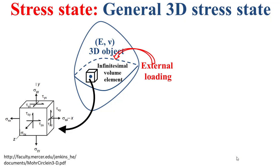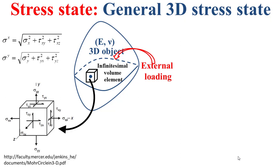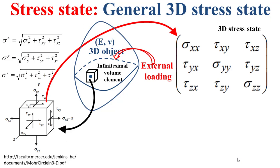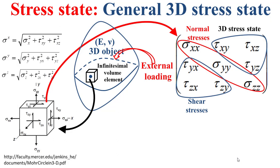We can define the concept of stress magnitude on the different faces of this cubic infinitesimal volume element. For example, sigma superscript x refers to the stress magnitude on the face having the x direction as normal, and so on for sigma superscript y and sigma superscript z. This 3D stress state can be summarized into a stress matrix, also called a stress tensor. The diagonal terms refer to normal stresses, and the extra-diagonal terms refer to shear stresses.